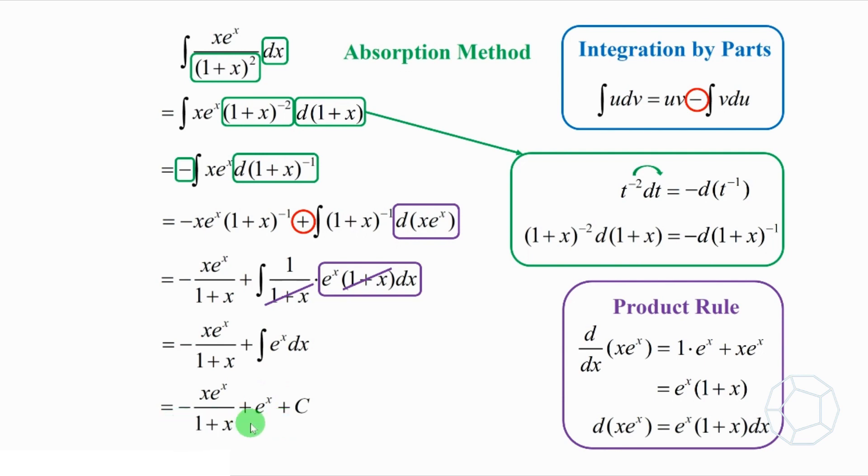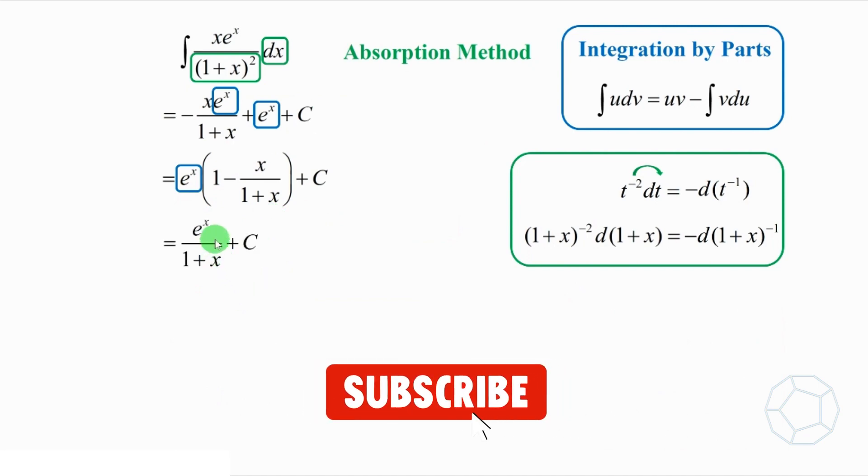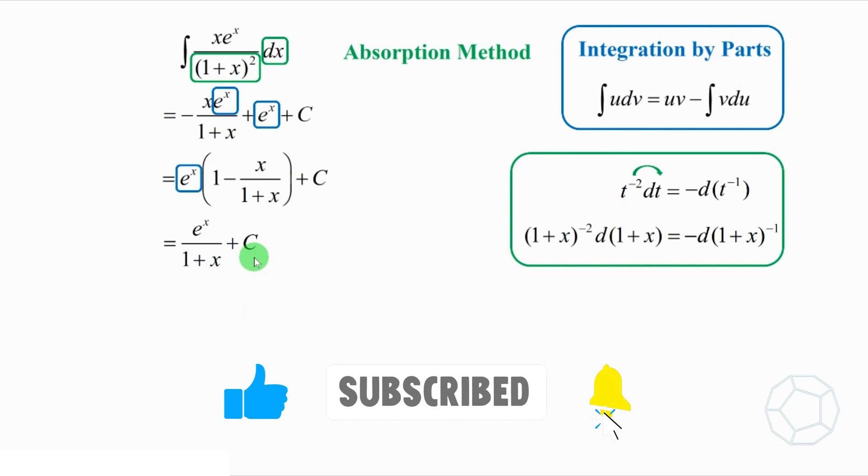Let's combine these two terms to simplify it. Again, we take out the common factor e to the power of x. Then, inside the bracket, we have 1 minus x over 1 plus x. After subtraction, we get the answer, which is e to the power of x over 1 plus x plus c.